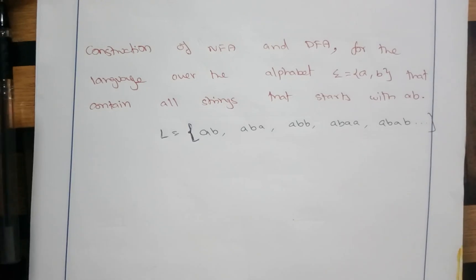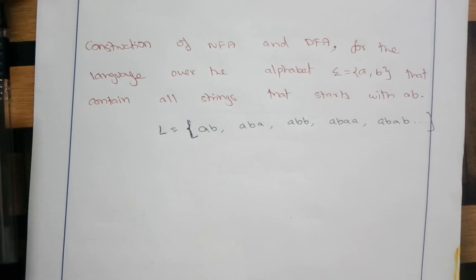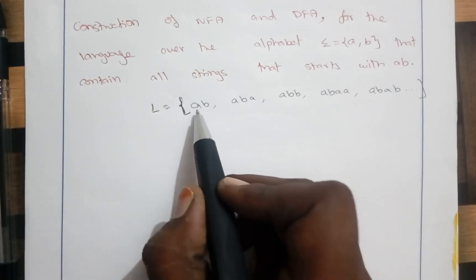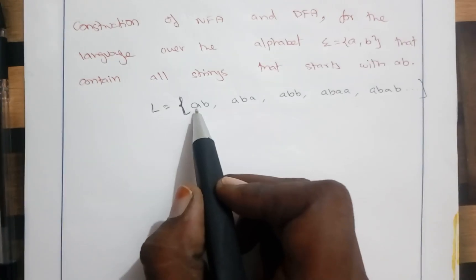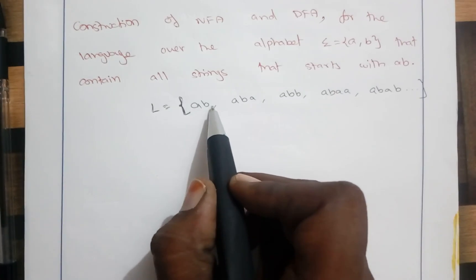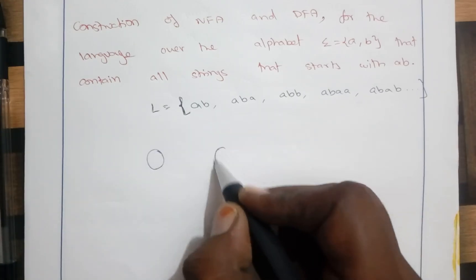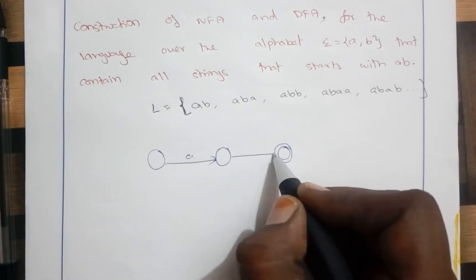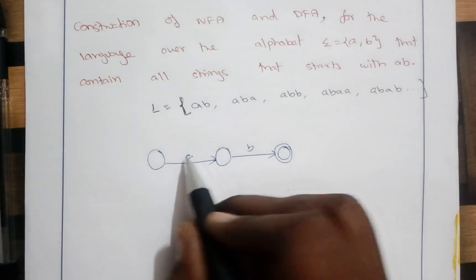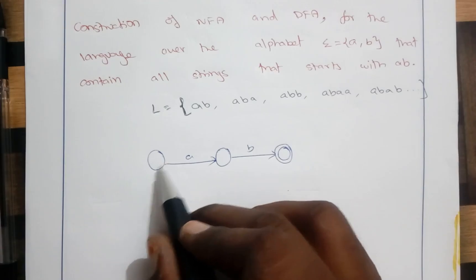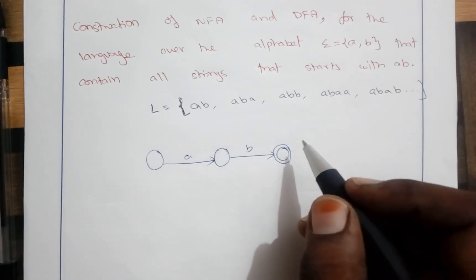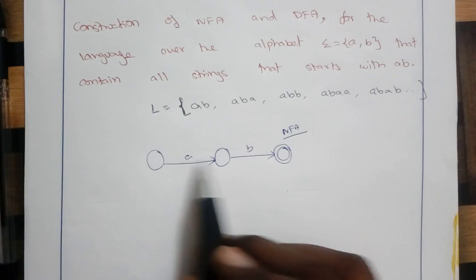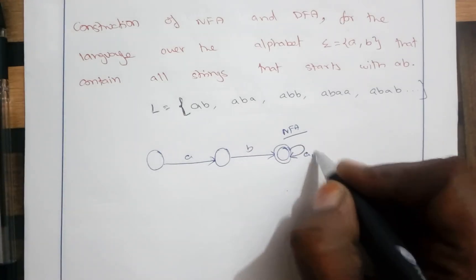To construct the NFA, we start with the minimal input. The minimal input is AB, and in order to process these two elements A and B, we need at least three states. When the input is just AB, the NFA or DFA should go to a final state.